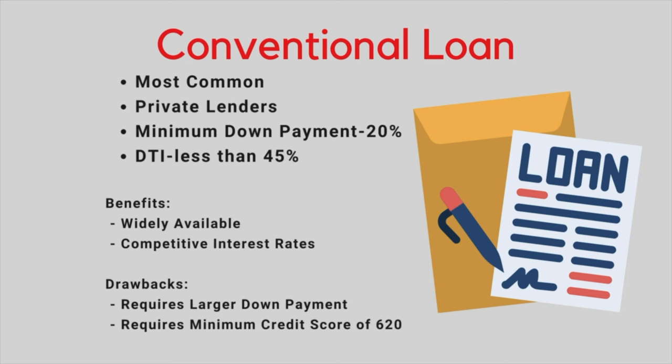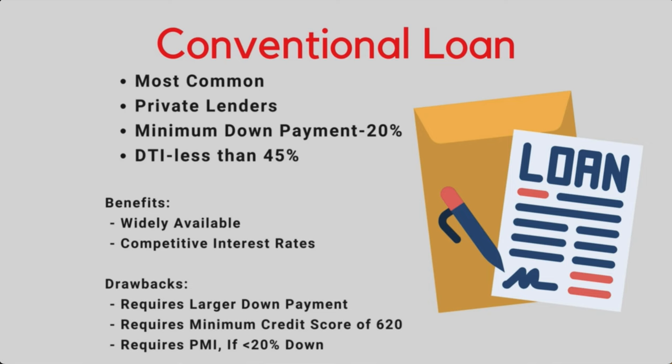A few benefits of the conventional loan is that it's widely available, has competitive interest rates if you have good credit, and there are few restrictions on how you can use the home as long as it's legal. Closing costs tend to be a little bit lower. The drawback is that a conventional loan generally requires a larger down payment than other loan programs, and you will need a minimum 620 credit score. It will also require private mortgage insurance if you put less than 20% down. However, you can drop the private mortgage insurance by contacting your lender once you get at least 20% equity in your home.